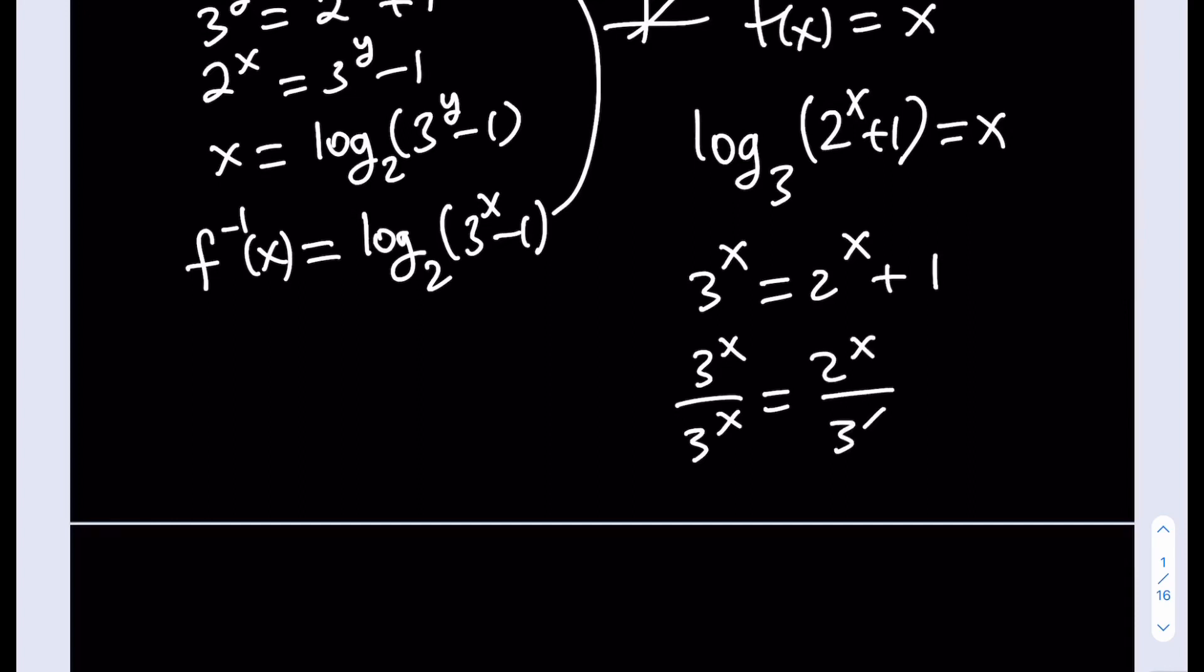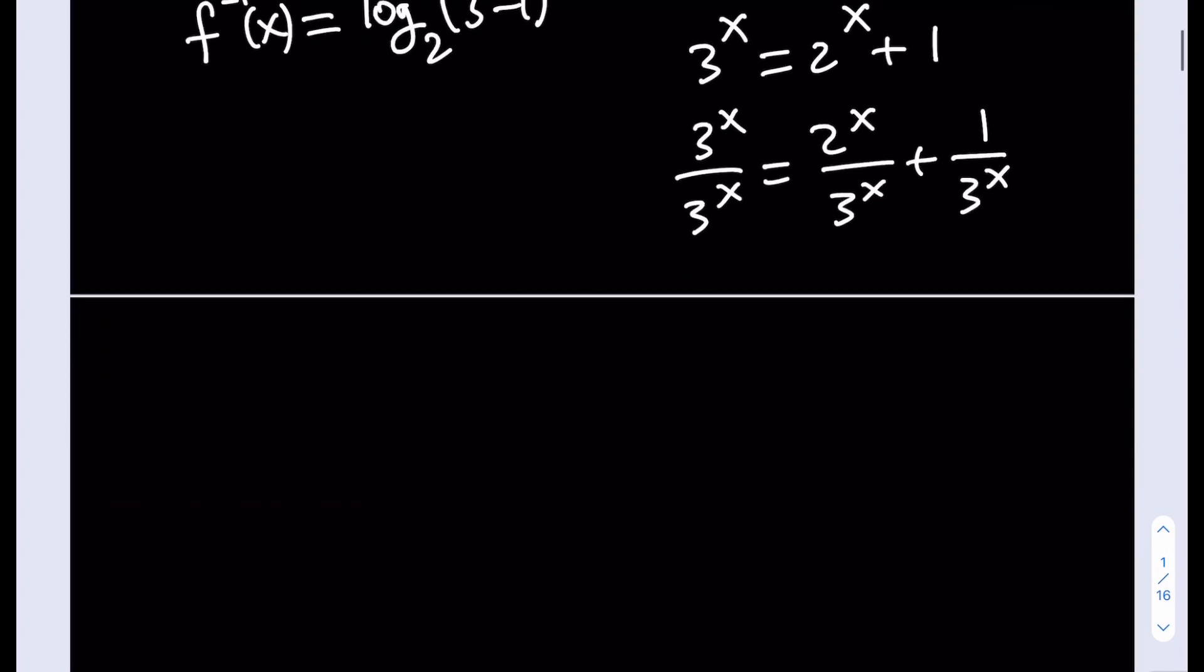And that's going to give us something nice. Since 1 to the power x is 1, I can just write this as (2/3)^x + (1/3)^x = 1. Nice.